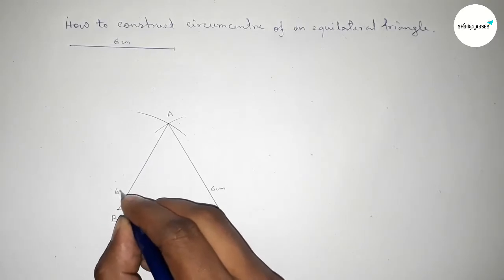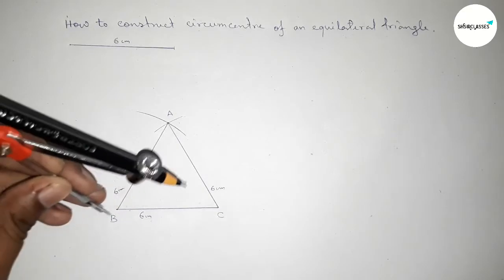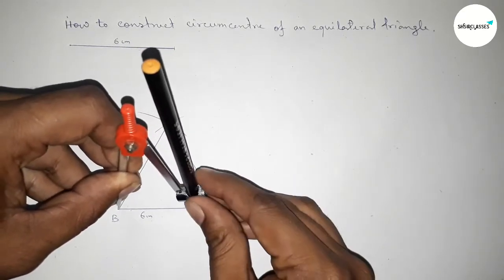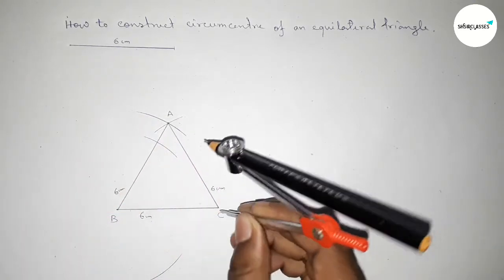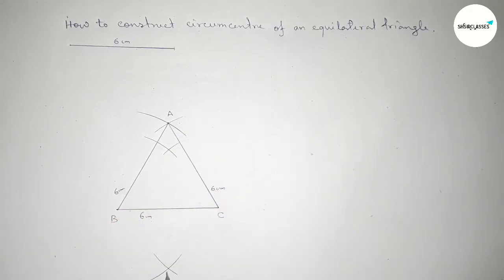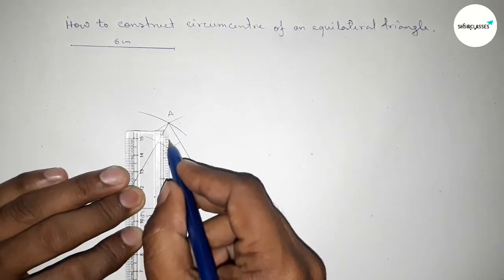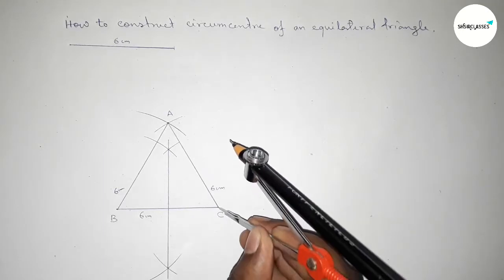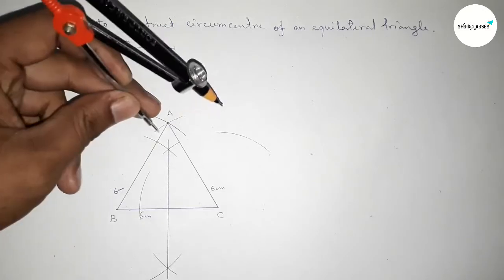Now first we have to bisect the line BC. Putting the compass at B and taking greater than half the length, drawing an arc, then putting the compass at C with the same length and cutting here. Both curves intersect at two points, giving the perpendicular bisector of BC.